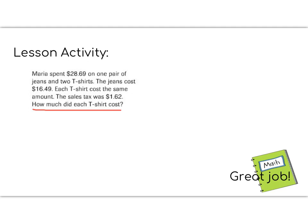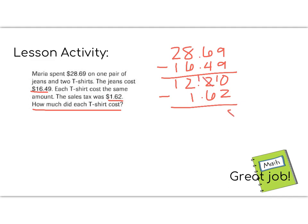Well, let's get started by we know that she spent $28.69 total. The jeans we know the cost of, the jeans cost $16.49. 9 minus 9 is 0. 6 minus 4 is 2. 8 minus 6 is 2. And 2 minus 1 is 1. We also know that the sales tax was $1.62. So that tax was extra, so we want to subtract it from our total. So $1.62. 2 minus 0 we can't do, so we have to borrow. 10 minus 2 is 8. 1 minus 6 we can't do, so we have to borrow again. 11 minus 6 is 5. 1 minus 1 is 0. And then bring down the 1. So now we're down to $10.58.